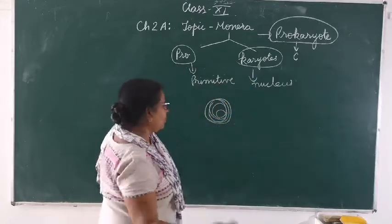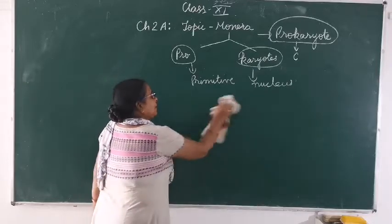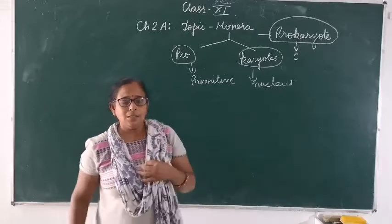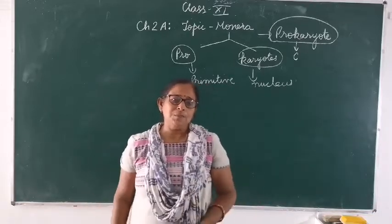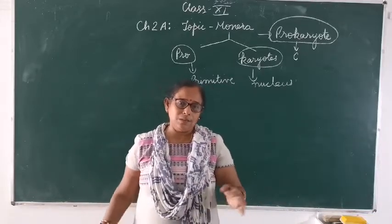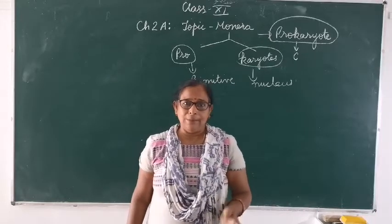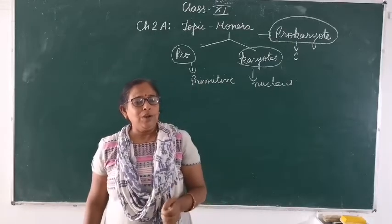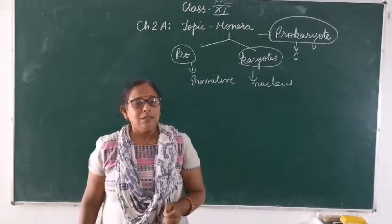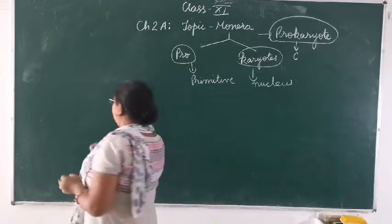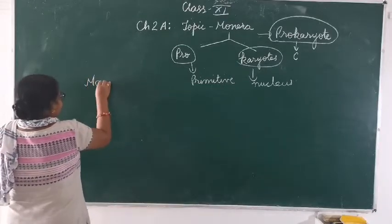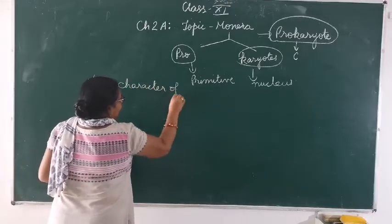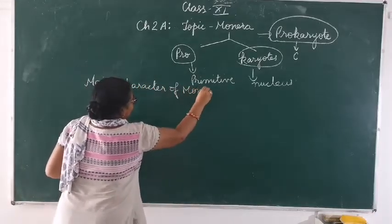Now again I am going to discuss about the introduction of Monera. Monera are having the most abundance in this world and in the atmosphere — everywhere you get Monera. Bacteria are also known as Monera. Now we will come to know about the main characteristic features of Monera.